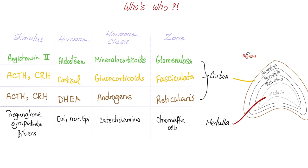Adrenal medulla: you have chromaffin cells that secrete catecholamines — epinephrine, norepinephrine, and dopamine. The stimulus comes from preganglionic fibers, part of the sympathetic nervous system. They release acetylcholine, and in response, the chromaffin cells secrete catecholamines.